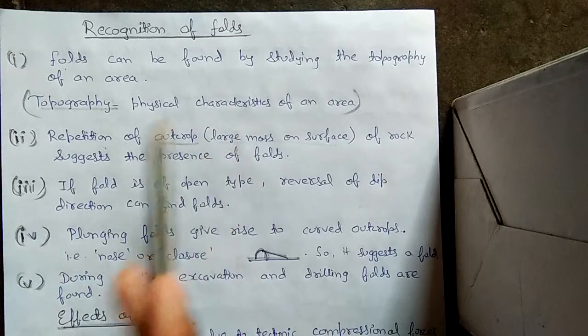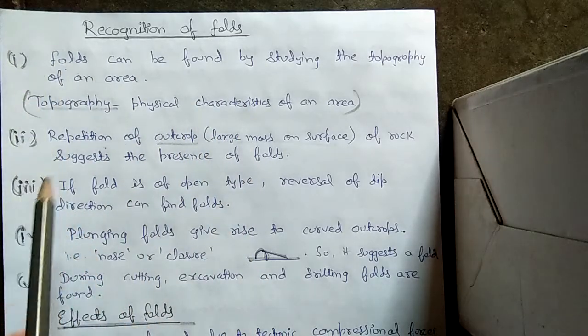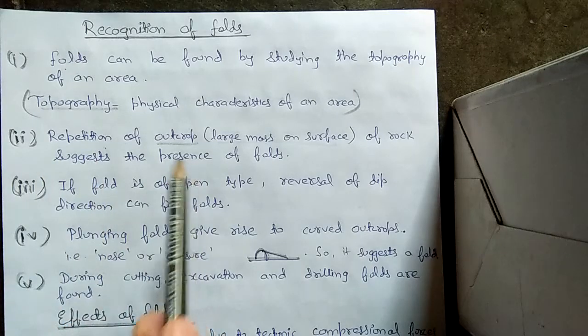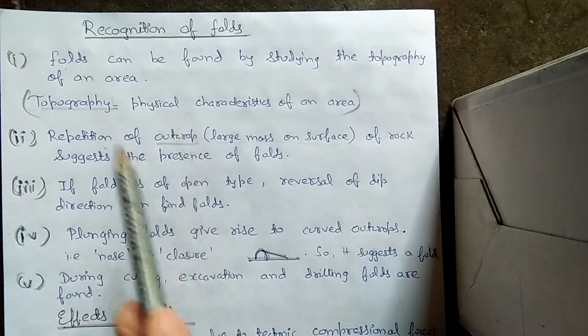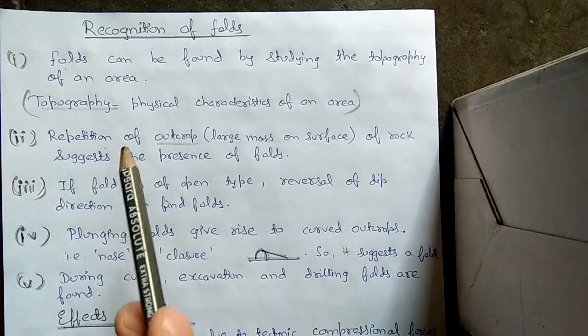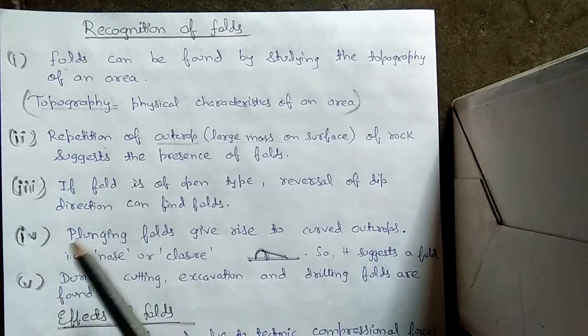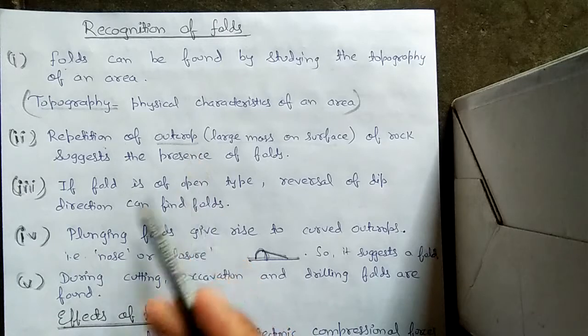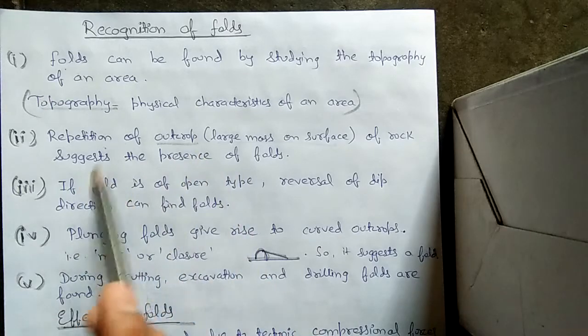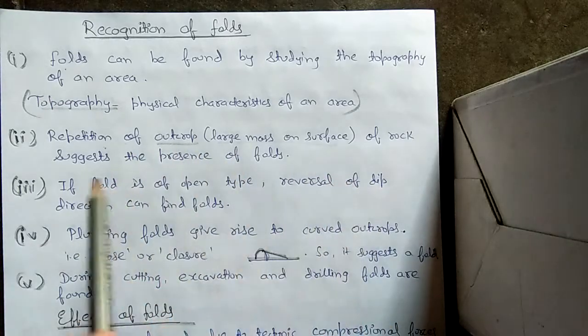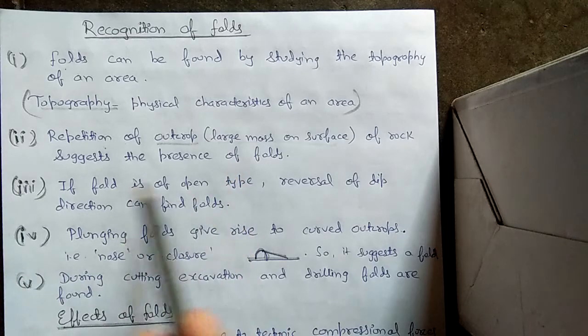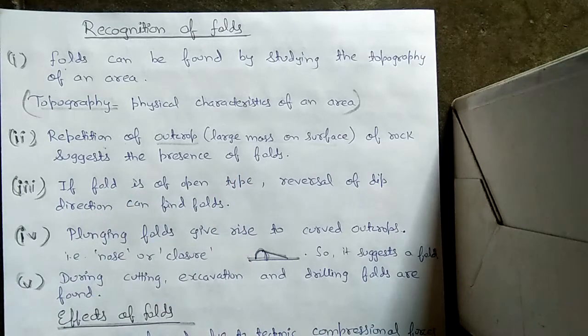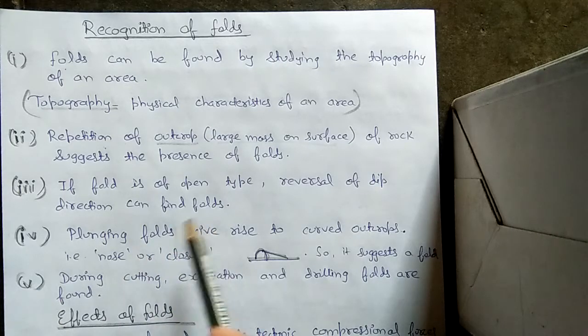The second is repetition of outcrop. What is an outcrop? First of all, we have to understand - an outcrop is a large mass of rock on the surface of earth. So repetition of outcrop of rock suggests the presence of folds. From one place, outcrop keeps on coming out, it is repeated, and after some time when we remove that, again an outcrop is found there. This suggests that there is a fold present in that place.